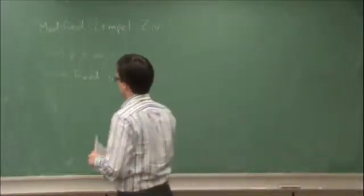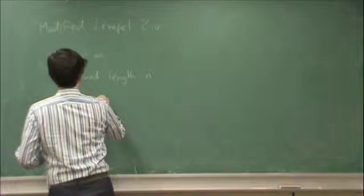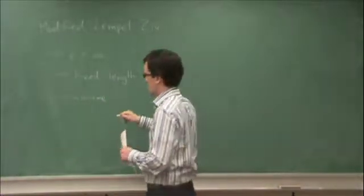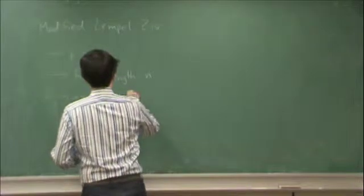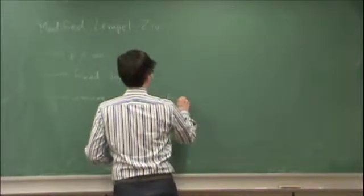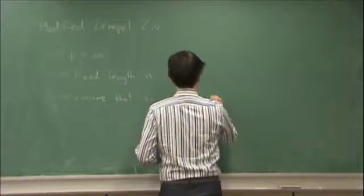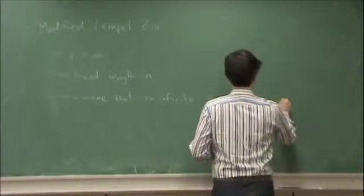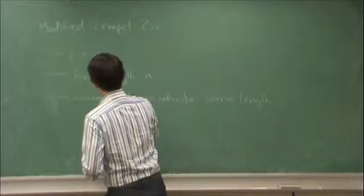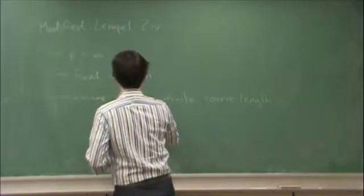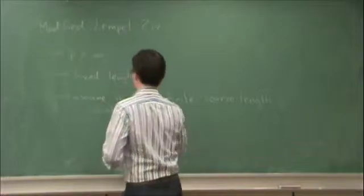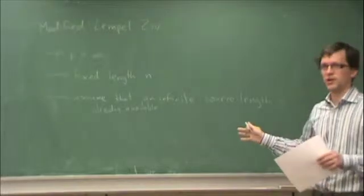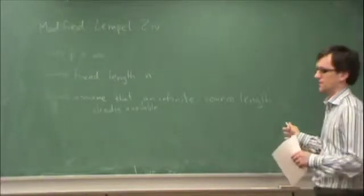Now, we're also going to assume, not only are we going to assume that there's no limit on history, but we're going to also assume that an infinite source length is already available. So, in other words, looking through history, we're going to assume that this algorithm has already been running since the beginning of the universe, or even before that. It's been running for an infinite amount of time.